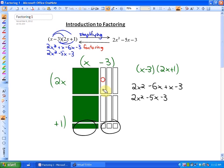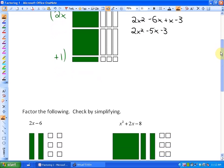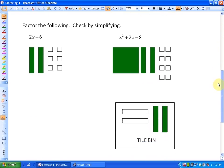So one method of factoring is to take the simplified expression and to create an area. We may have to introduce zero pairs in order to create an area. We're just going to look at two examples, and that will be it.